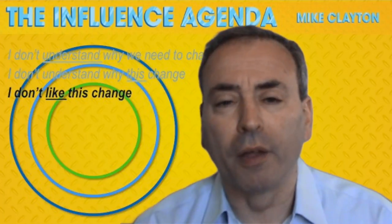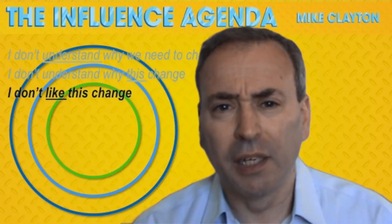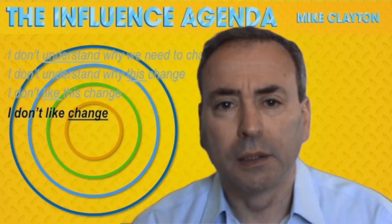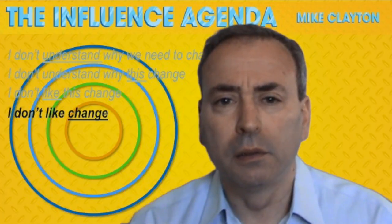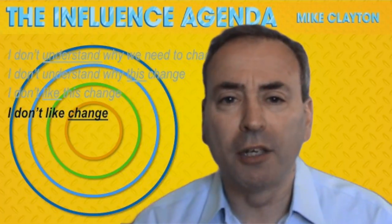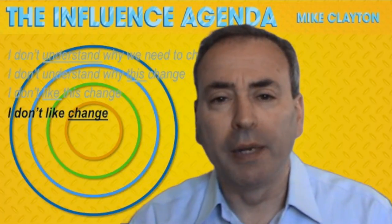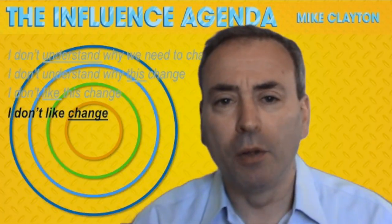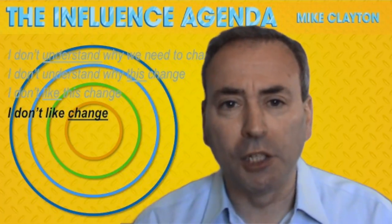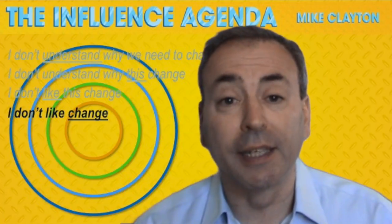Then we get to another, even tougher level of resistance: 'It's not this change — it's change. I don't like change.' That is the fourth layer of resistance. Of course, none of us like change, but equally we all spend our whole lives going through change — it's just that we're at different ends of the spectrum. Some people like masses of change, but even for them there is a limit, and beyond that limit they feel uncertain, lack confidence, and fear the implications. You need to work with them to show them how to adapt and give them confidence.